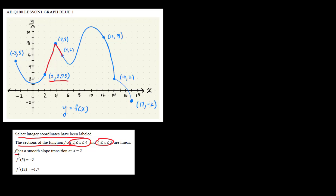It says that f has a smooth slope transition at x equals 2. So at x equals 2, the slope is changing but the transition between the curvy part and the line is smooth — without any corners or sharp transitions. It also says here that f prime of 5 is equal to negative 2. We need to be able to translate that: f prime of 5 equals negative 2 means we have a slope at x equals 5, and that instantaneous slope is equal to negative 2.